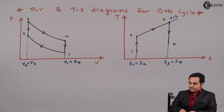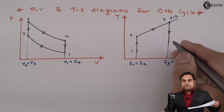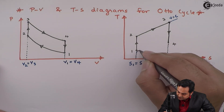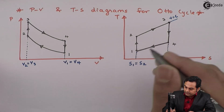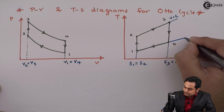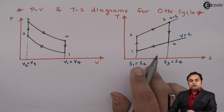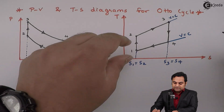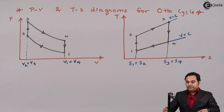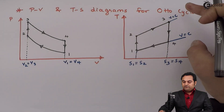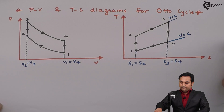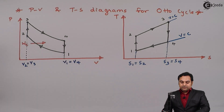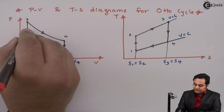After expansion, the heat rejection process 4 to 1 is at constant volume. This line on the TS diagram is a constant volume line because heat is rejected at constant volume. An important note: on the TS diagram for the Otto cycle, the constant volume lines are of diverging nature — they go on increasing and are not exactly parallel.